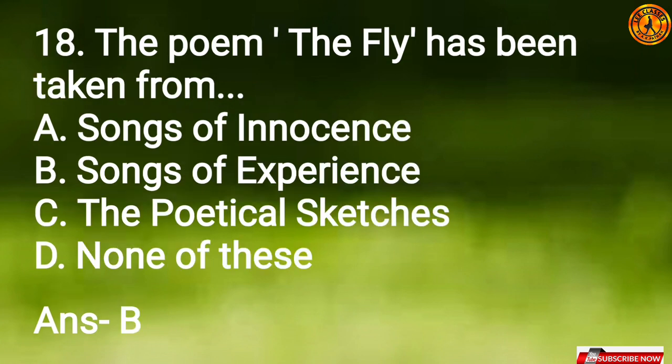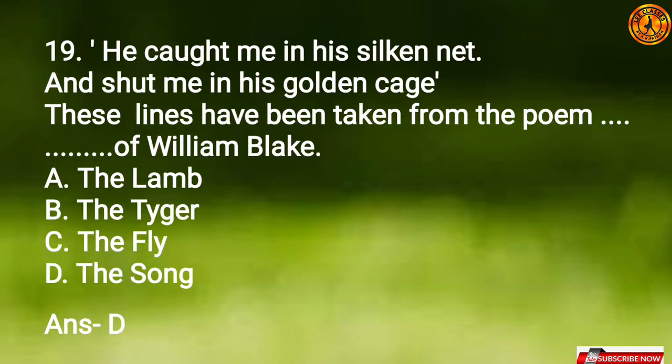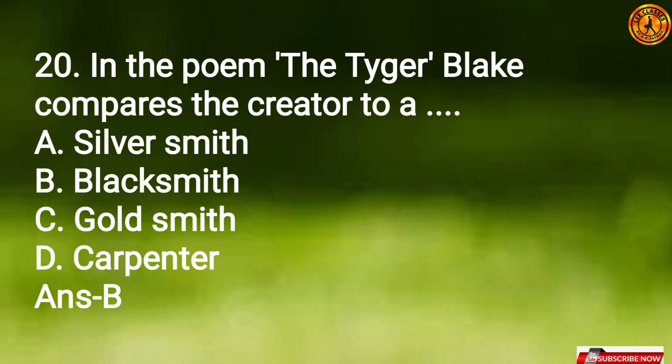Question 17: 'The Lamb' is the symbol of Option C, innocence. Question 18: The poem 'The Fly' has been taken from Option B, Songs of Experience. Question 19: 'He caught me in his silken net and shut me in his golden cage' — these lines have been taken from the poem Option D, 'The Song'.